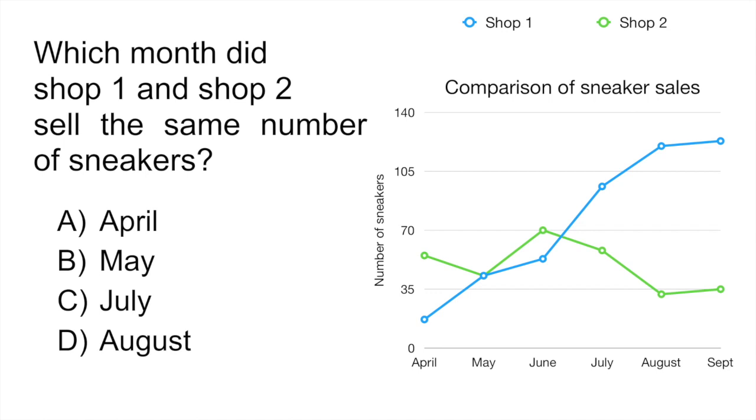And the question is telling you at what point did shop one and shop two sell the same number of sneakers? So what you would look at is where the graphs, the lines, intersect, which is at May. This is the point at which both shops were selling the same number of sneakers. You can see that shop one kind of ended up doing much better. They started kind of low-key in April but they really kicked it out of the ballpark in September. Whereas shop two, the green line, started off well but then they kind of went downhill as the year progressed. So the correct answer would be B.